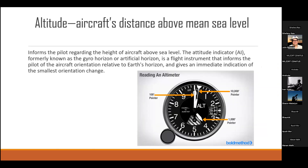The next display is the altitude indicator, which tells the aircraft's distance above sea level. In the image, you can see the arrows used for pointing the distance above sea level, informing the pilot of the aircraft's height. It is a flight instrument that informs the pilot of the aircraft's orientation above the earth's horizon.